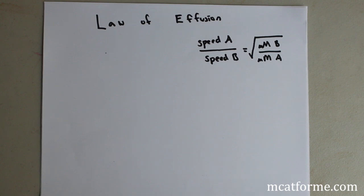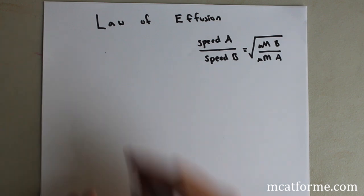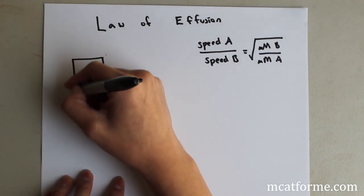So the next thing we're going to be talking about is the law of effusion, or Graham's law of effusion. So effusion means exit, and so we're going to be dealing with gases. So it's the speed that a gas particle exits a certain location. And this is always going to deal with pinholes.